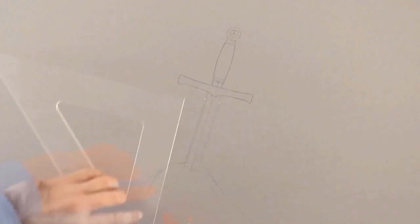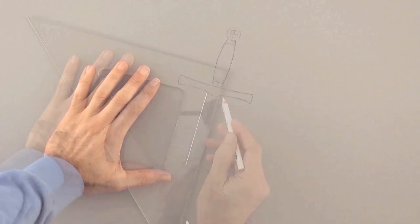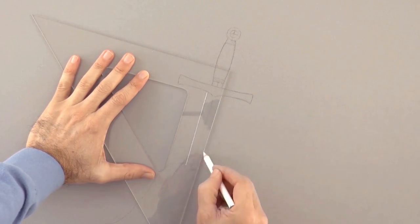First with a white pencil and using a square to go straight, we draw the edge on both sides.